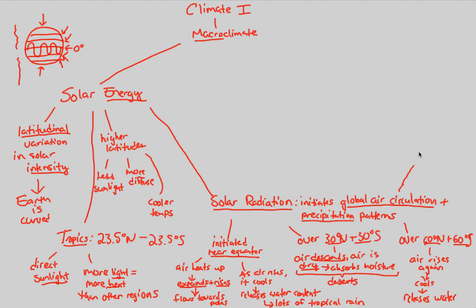Finally, over the poles — the polar caps of the Earth — air sinks, and if air sinks, it flows back to the equator. So again, we're looking at solar radiation which initiates global air circulation: the rising, the flowing, the descending — all of these things we've covered. And then that results in the precipitation patterns we've just observed.